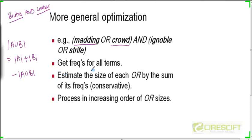So one heuristic that we could use to estimate the size of an OR term is to sum the lengths of the two lists which are being ORed. We can estimate the size of each OR by the sum of its frequency and this is obviously a conservative estimate because in reality this intersection is going to be finite and the actual length is going to be smaller than the sum of the lengths.